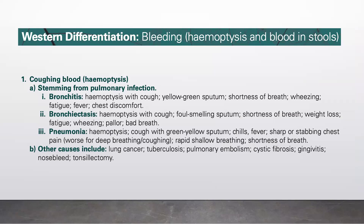In pneumonia, there is hemoptysis and cough with green-yellow sputum, chills, fever, sharp or stabbing chest pain which is worse with deep breathing and coughing, and rapid shallow breathing with shortness of breath. Other causes of hemoptysis include lung cancer, tuberculosis, pulmonary embolism, cystic fibrosis, gingivitis, nosebleed, and tonsillectomy.